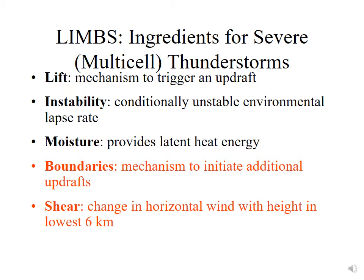For a multi-cell thunderstorm, we still need lift, instability, and moisture, but we need two additional ingredients. We need boundaries, which provide a mechanism to initiate additional lift, and we need wind shear — a change in the horizontal wind with height, typically occurring in the lower half of the troposphere. The mnemonic for multi-cell thunderstorms is LIMBS: lift, instability, moisture, boundary, and shear.